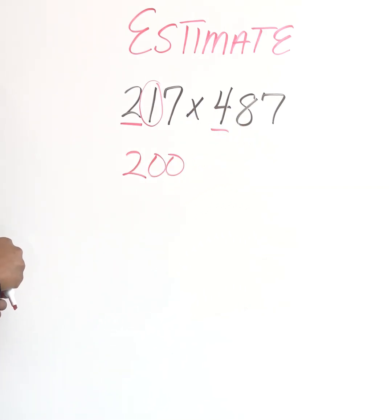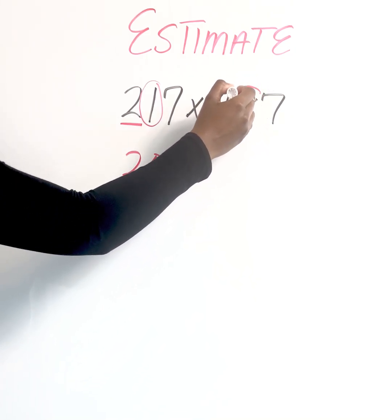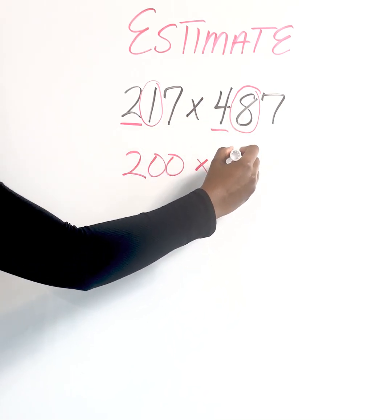All right. And then we're going to repeat the same process on the opposite side. Four is in the hundredth place. So I'm going to evaluate the value to the right of it. Because that's an eight, my four is going to increase by one to five.